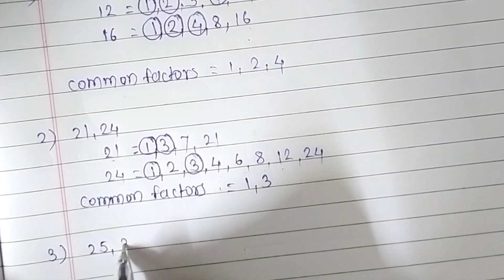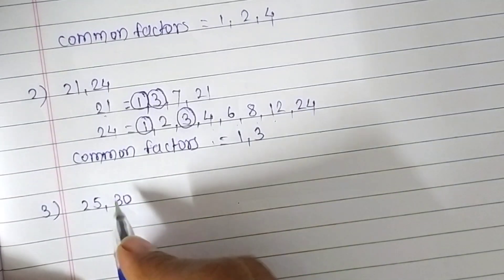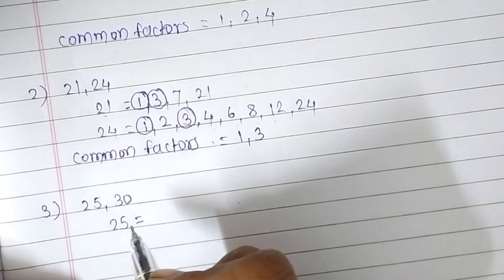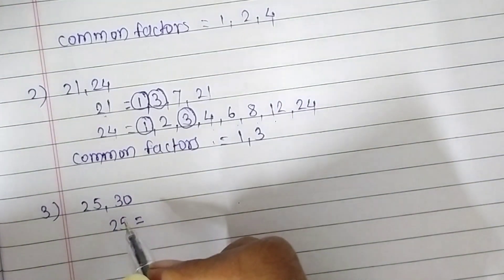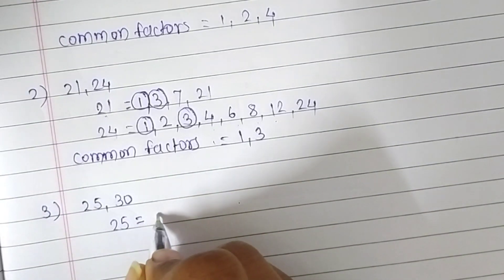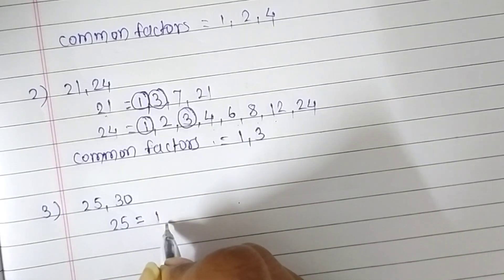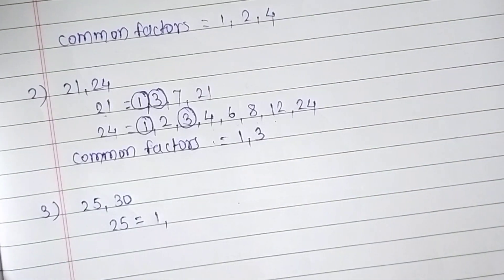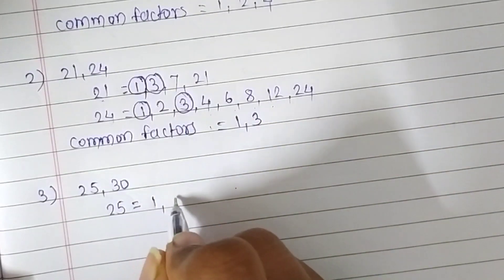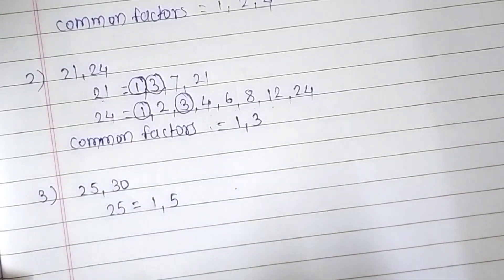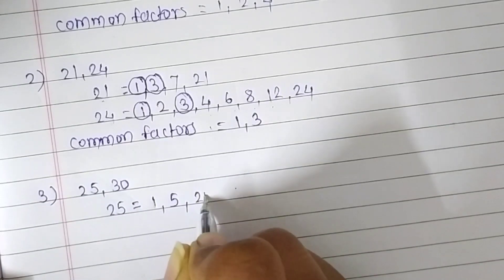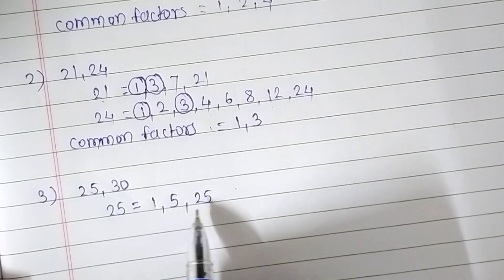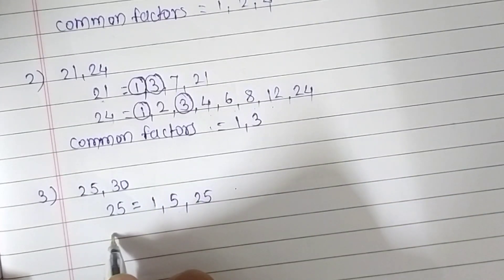The next question is 25 and 30. First we write the factors of 25 — we find which tables 25 appears in. Every number has 1 as a factor, so we write 1 first. Then 5 — five 5s are 25. And 25 itself. So the factors of 25 are 1, 5, and 25.